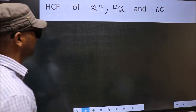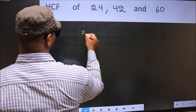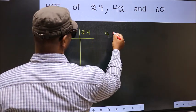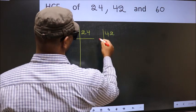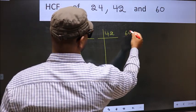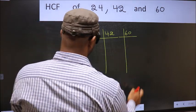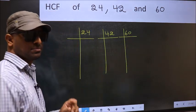What I mean is: 24, 42, 60. This is your step 1.